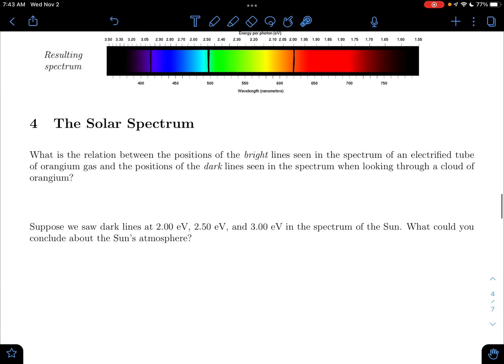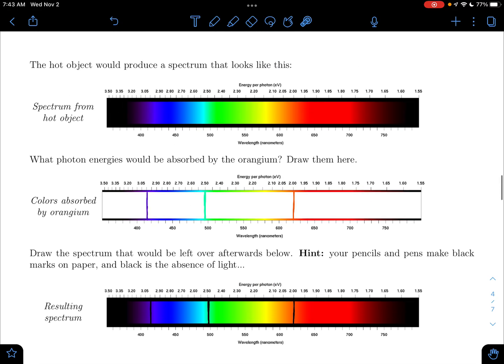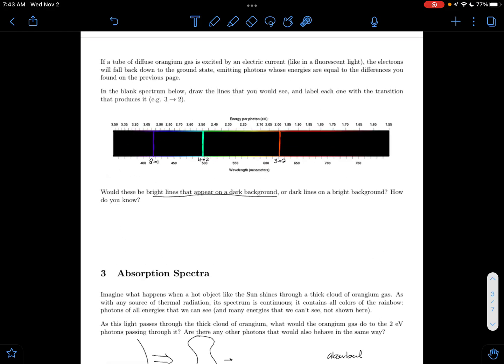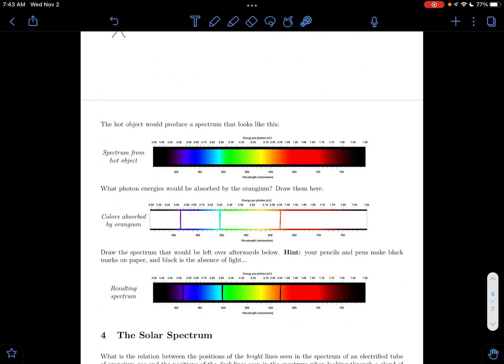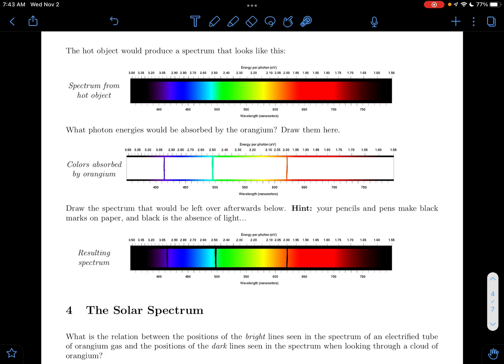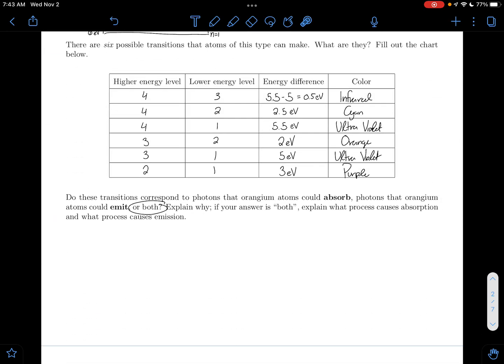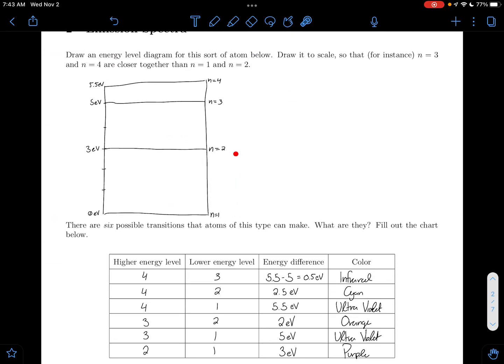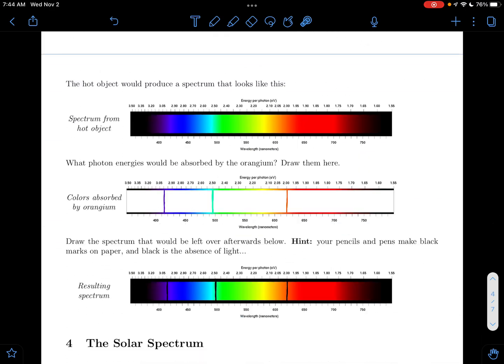The relationship between the bright lines and the dark lines, I kind of said that already, because I just copied the lines from up here to put them down here. They're at the same energies. They're at the same wavelengths. The only difference is when I go up in my energy level, I'm absorbing. And when I go down, that's when I'm emitting photons.